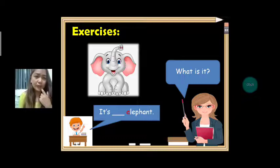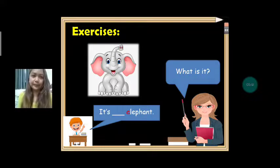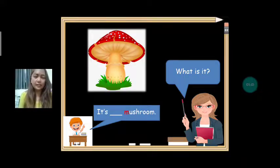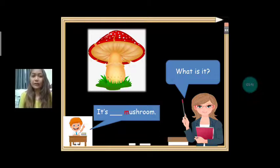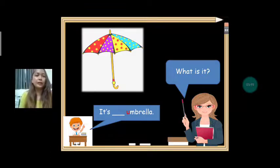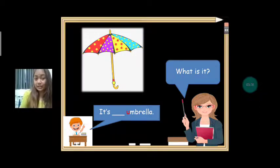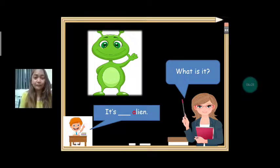Now let's answer the exercises. Look at the picture — what is it? It's an elephant, because elephant starts with letter E. Next is mushroom — mushroom starts with letter M, so it's a mushroom. Umbrella starts with letter U, so it's an umbrella. Alien starts with letter A — it's an alien.